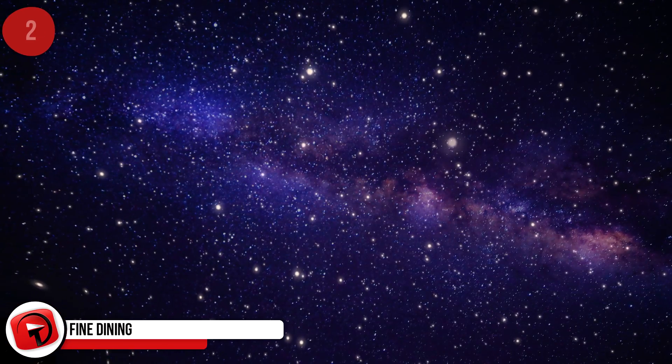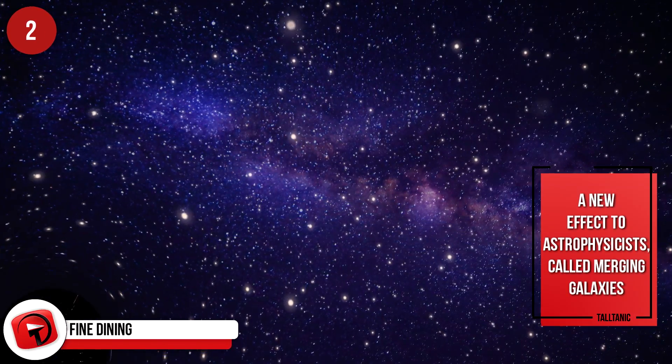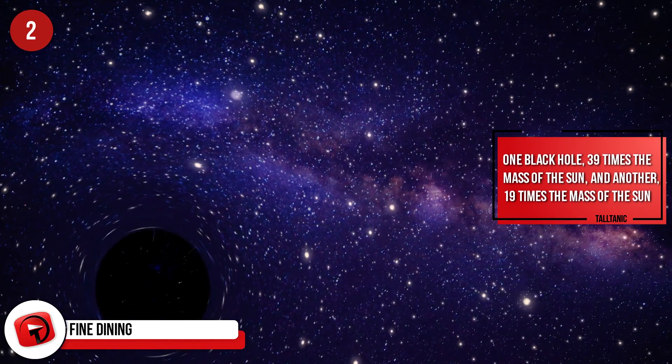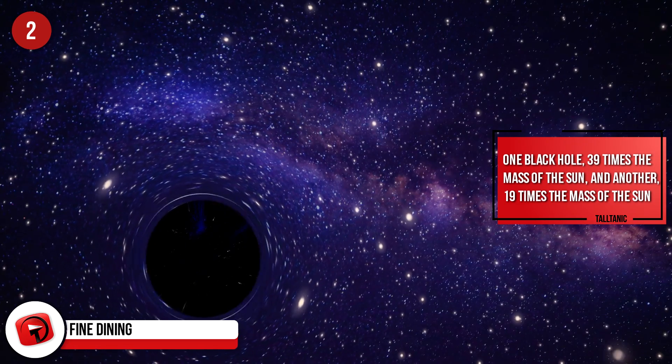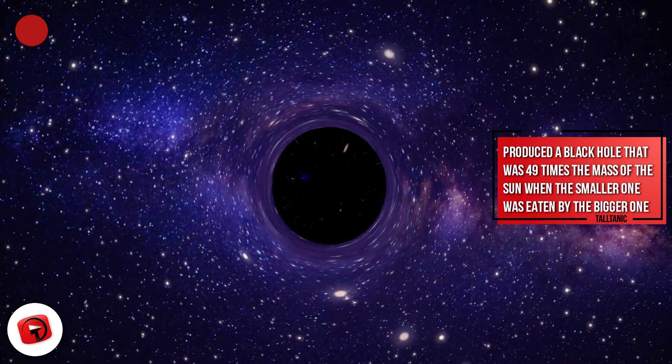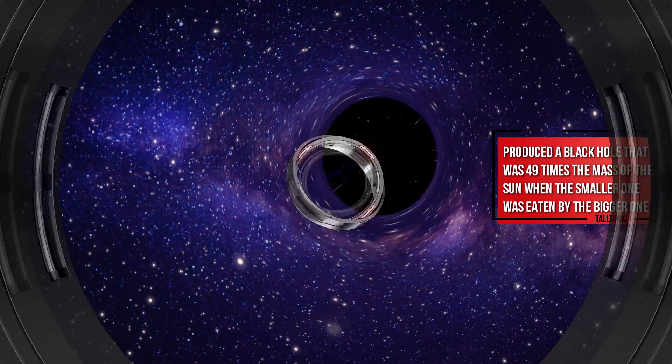Fine dining. Black holes can eat each other, a new effect to astrophysicists called merging galaxies. One black hole 39 times the mass of the sun, and another 19 times the mass of the sun, produced a black hole that was 49 times the mass of the sun when the smaller one was eaten by the larger one.